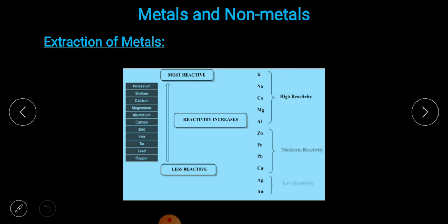For understanding extraction of metal, we first have to see the reactivity series. Reactivity series means the different elements in the periodic table are arranged in their reactivity — which are highest reactive, which are moderate reactive, and which are very less reactive.